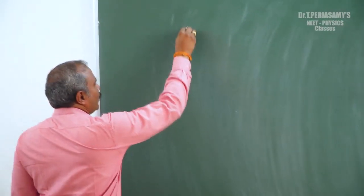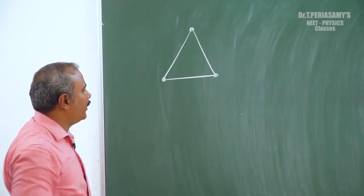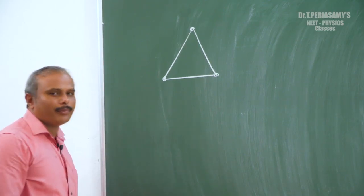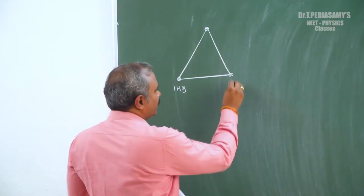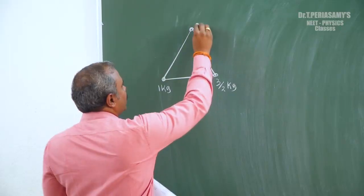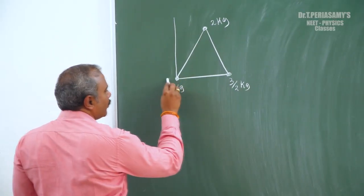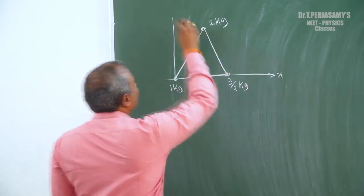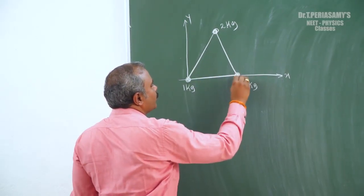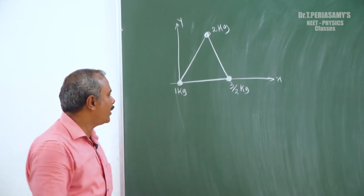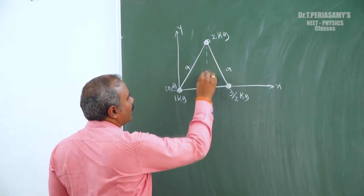Now we will define the problem. We will define an equilateral triangle with three sides. We have three masses: the first mass is 1 kg, the second mass is 3/2 kg, and the third mass is 2 kg. We need to fix the coordinate system. I will fix the coordinate system — this axis is x and this is y. The coordinates are (0,0), (a, 0), and (a/2, ?).